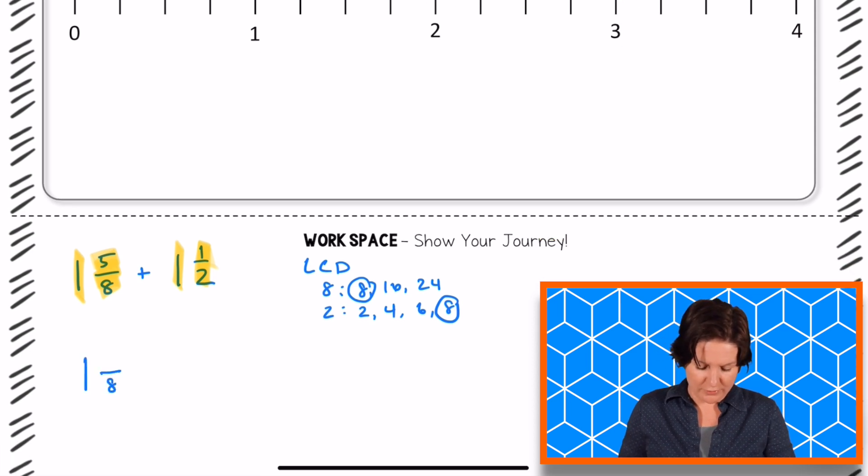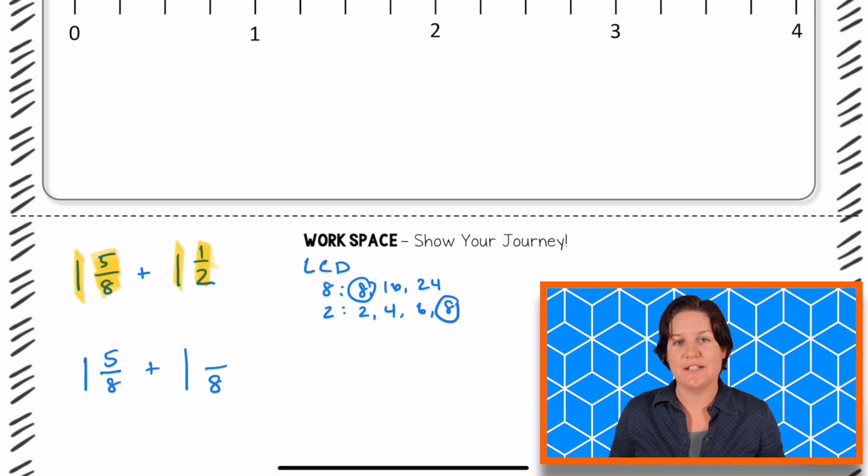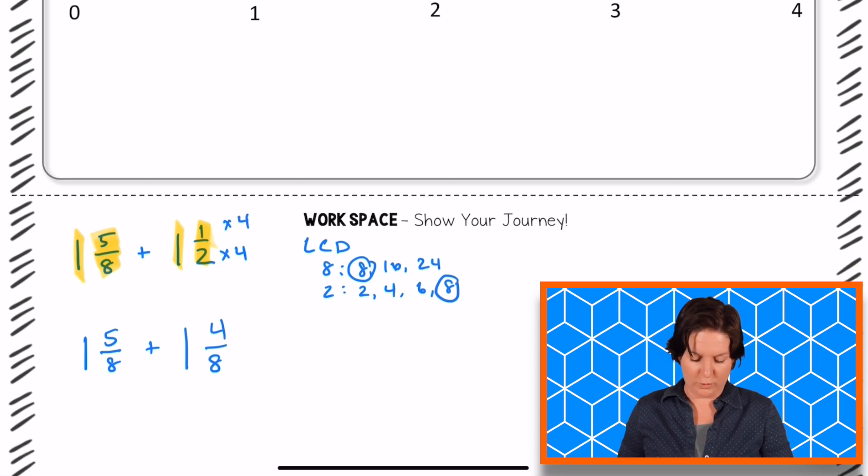When I rewrite those fractions with a denominator of eight, looks like that. One and five eighths, nothing needs to change because we're keeping that denominator of eight. But for one and a half, one and one half, I multiply by four, two times four equals that denominator of eight. Same on the bottom, same on the top. So that would be one and four eighths.